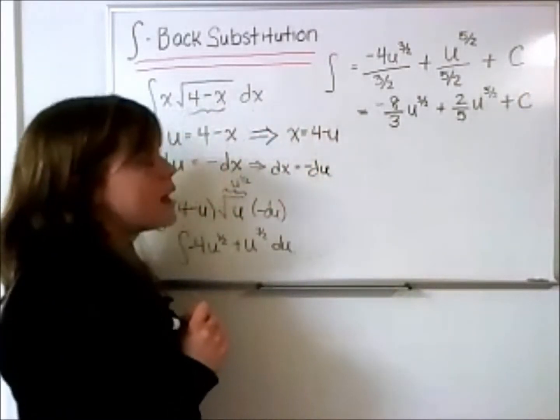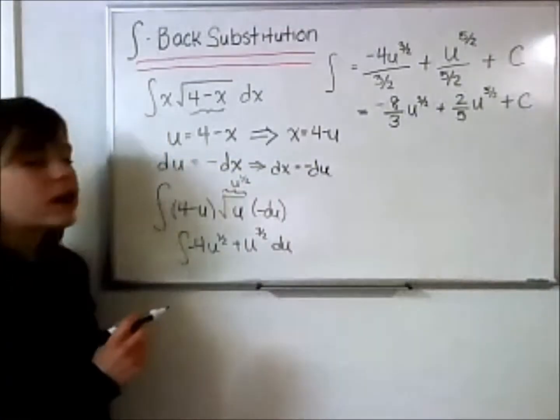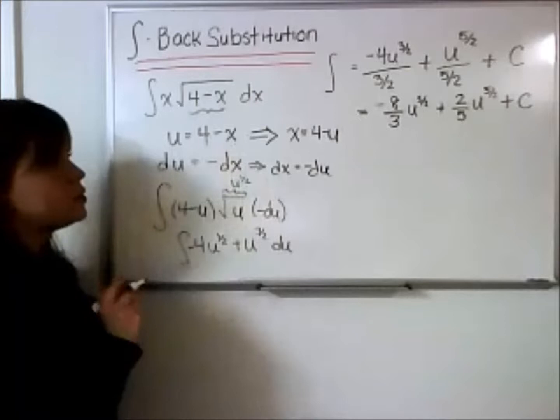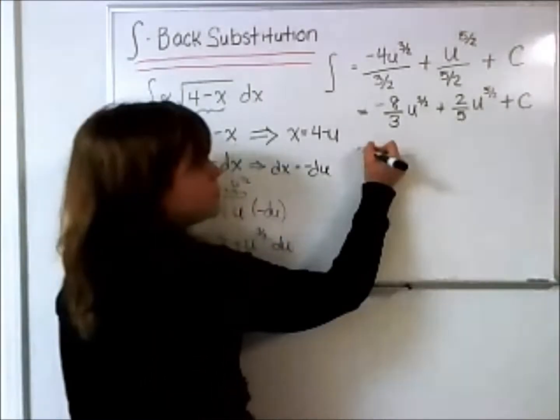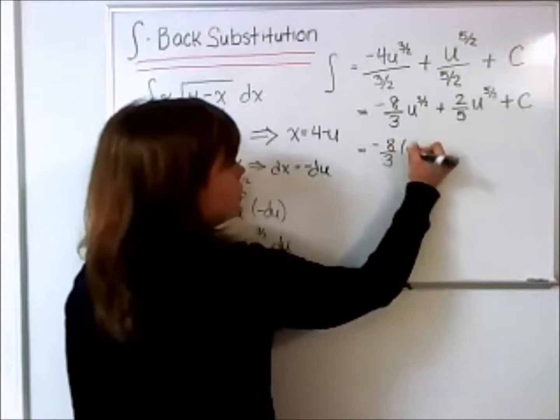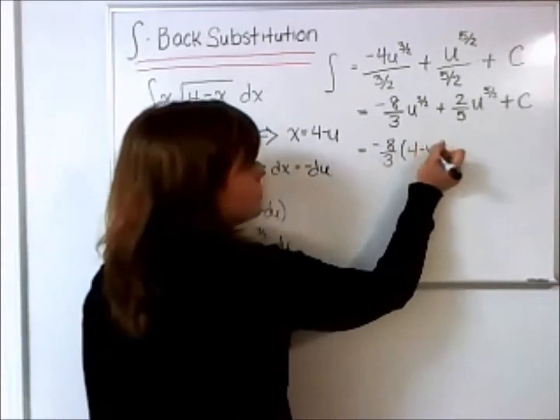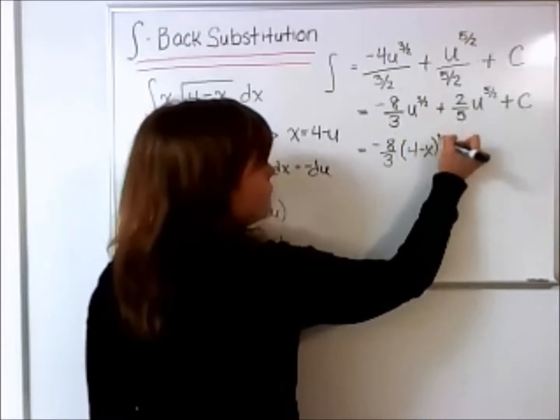Okay, and then our last step is to bring our x's back in, and we do that by going to our original substitution. So we'll get a negative 8 thirds times the quantity, 4 minus x, raised to the 3 halves,